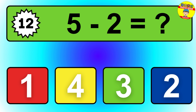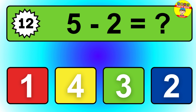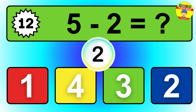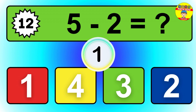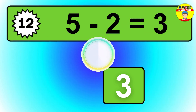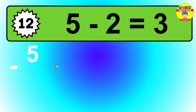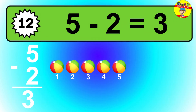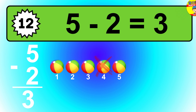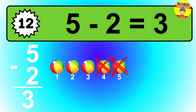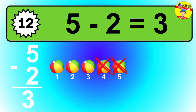Question 12. 5 minus 2 equals what? So the answer is 5 minus 2 is 3. Let's count it: 1, 2, 3.